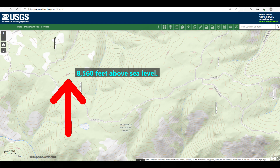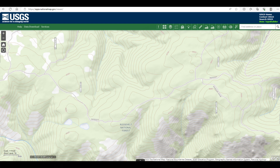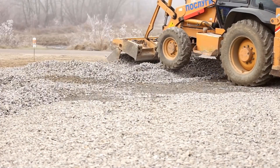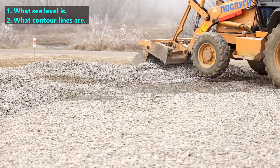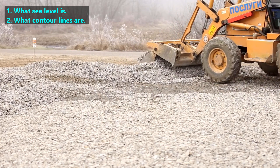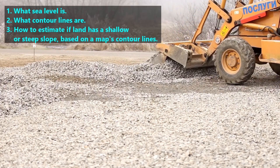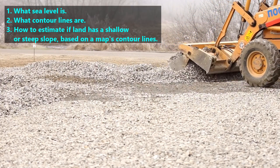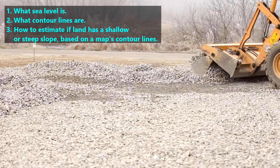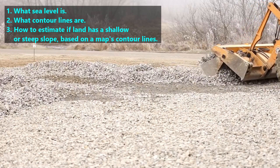Contour lines tell us how high land is compared to sea level, what the shape of the land is, and how steep its slope is. In this video, we will learn what sea level is, what contour lines are, and how to estimate if land has a shallow or steep slope based on a map's contour lines.